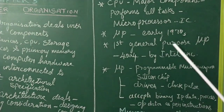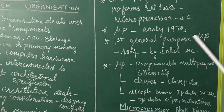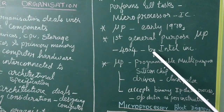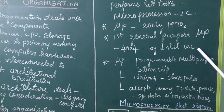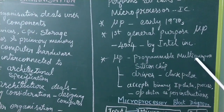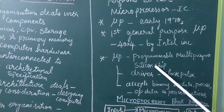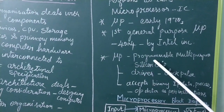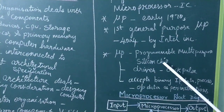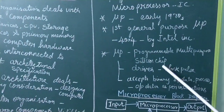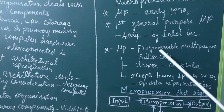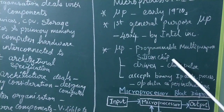The first general purpose microprocessor's name is 4004. It was developed by Intel Incorporation. This microprocessor is a programmable multipurpose silicon chip. Silicon is a kind of sand, and the chip is multipurpose — that means it is a programmable multipurpose silicon chip.